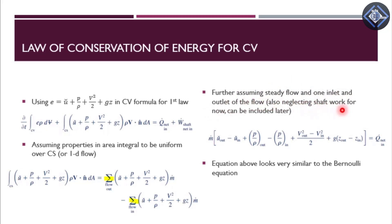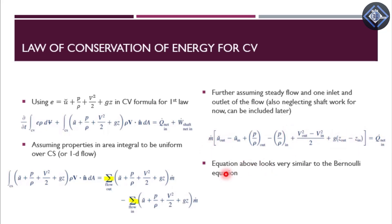Since pressure work has already been included as energy into our system, assuming properties are uniform, they come out of the integral and we have the mass flow rate. This is the form of the law of conservation of energy for a control volume. This equation looks very similar to the Bernoulli equation we had seen earlier in the third chapter.